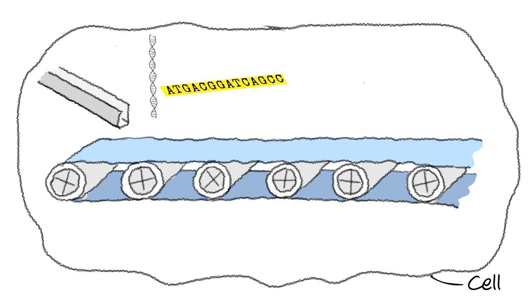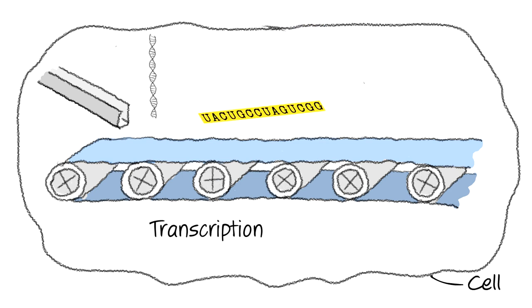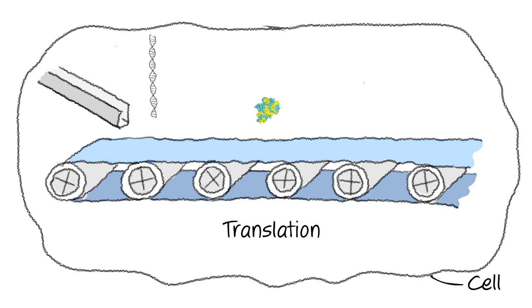Then, this instruction is copied, in other words transcribed, into a message called messenger RNA that leaves the nucleus. This message is then translated to the language required to make the protein.